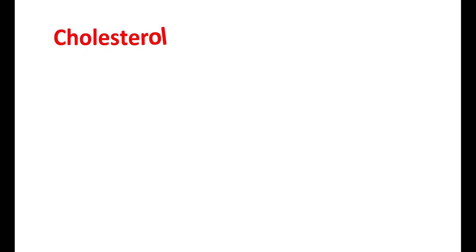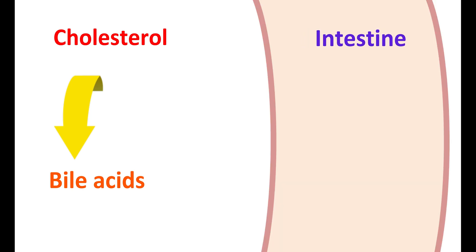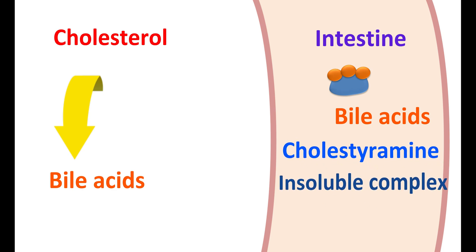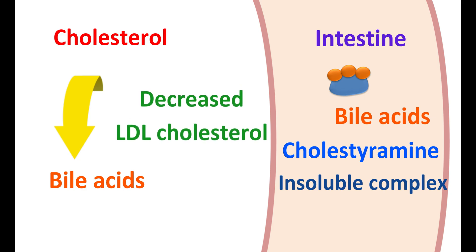In the body, cholesterol acts as a precursor for synthesis of bile acids. These bile acids are secreted into the intestine through biliary secretion, where they are responsible for digestion of dietary fats. Normally, these bile acids are reabsorbed through enterohepatic circulation; however, in the presence of cholestyramine they form an insoluble complex unsuitable for absorption. This results in increased excretion of bile acids, reducing their levels in systemic circulation, causing cholesterol to be more converted into bile acids and thereby decreasing serum LDL cholesterol levels.